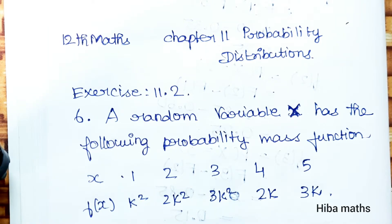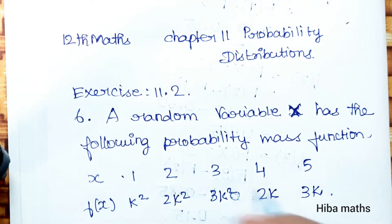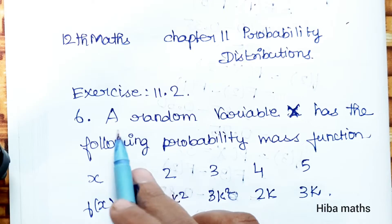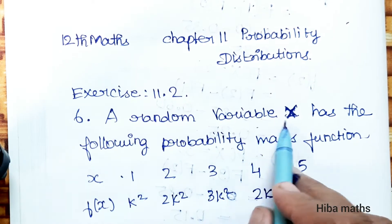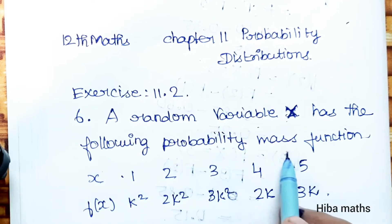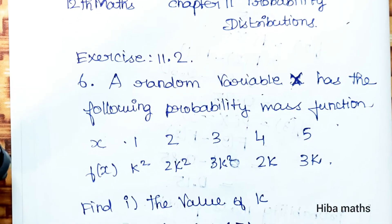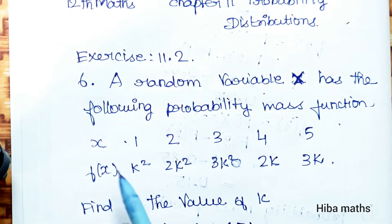Hello students, welcome to Hibamax. 12th Standard, Chapter 11 Probability Distributions, question 11.26. A random variable X has the following probability mass function.